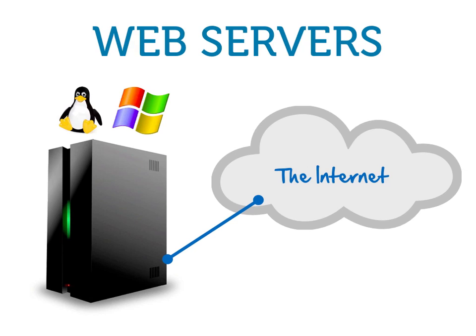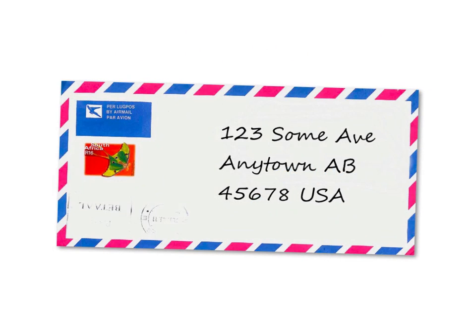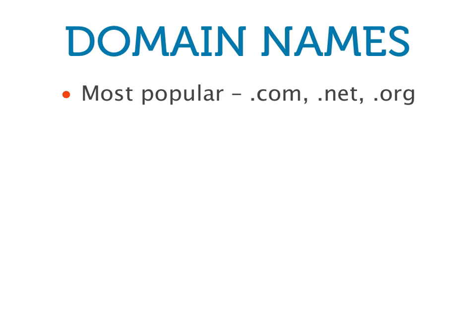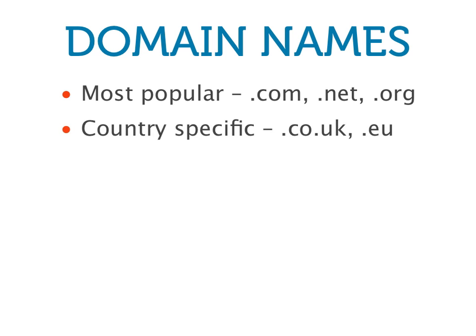Domain names are the addresses that tell visitors where to find a website. Think of the domain name as a mailing address to your website on the web server. The most common domain names are .com, .net, or .org, but there are also country-specific ones like .co.uk and .eu, and exotic ones like .me and .fm. Domain names are registered through a registrar, and common domain names cost approximately $10 to $15 each year.